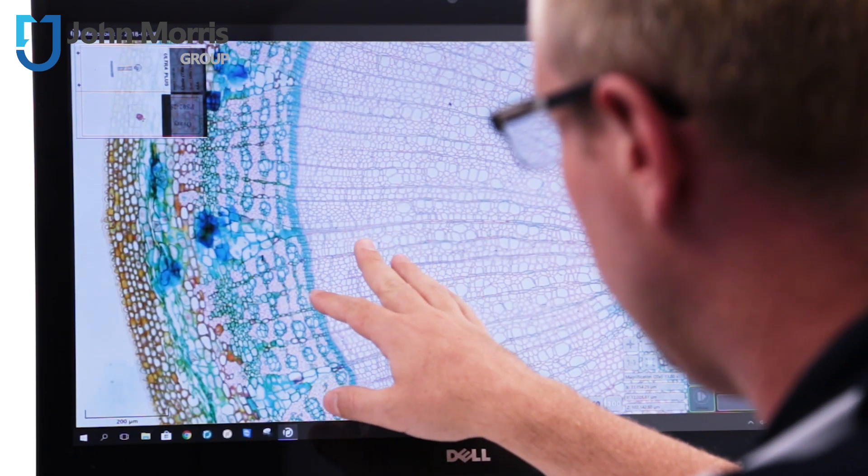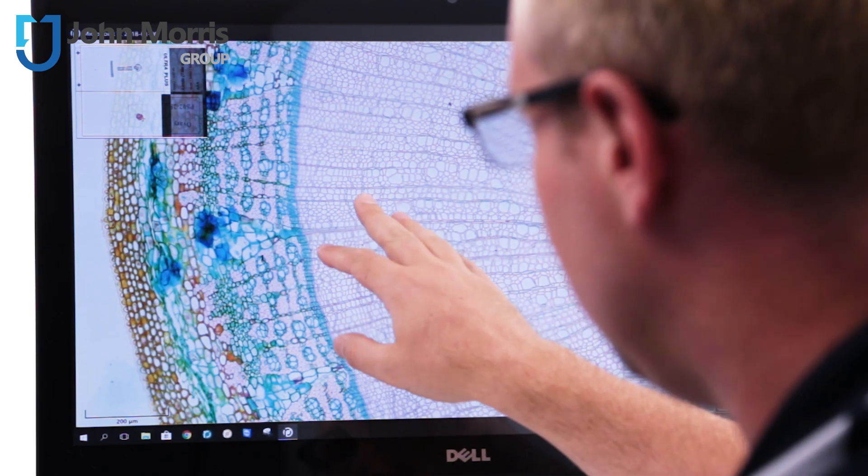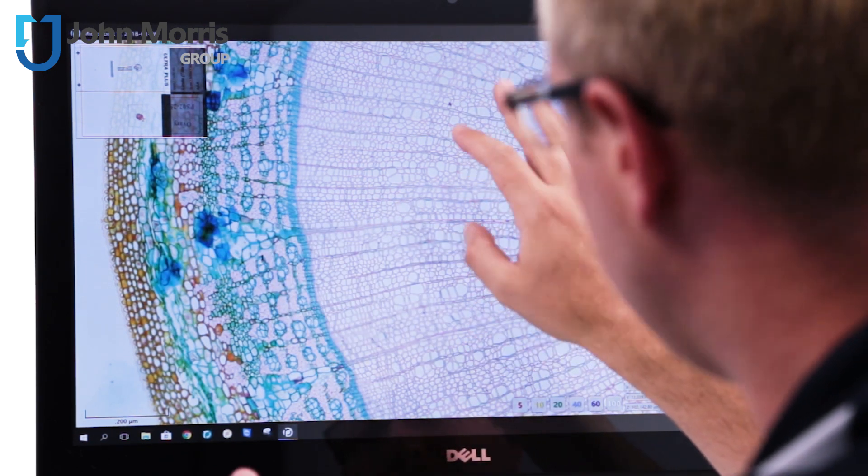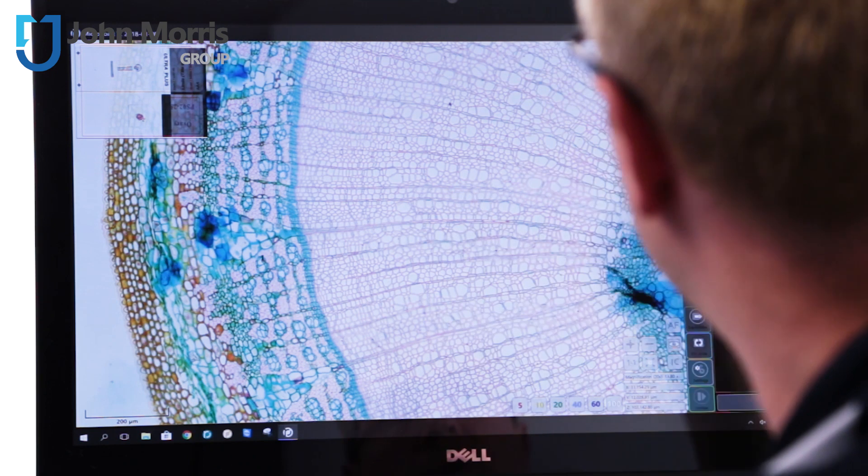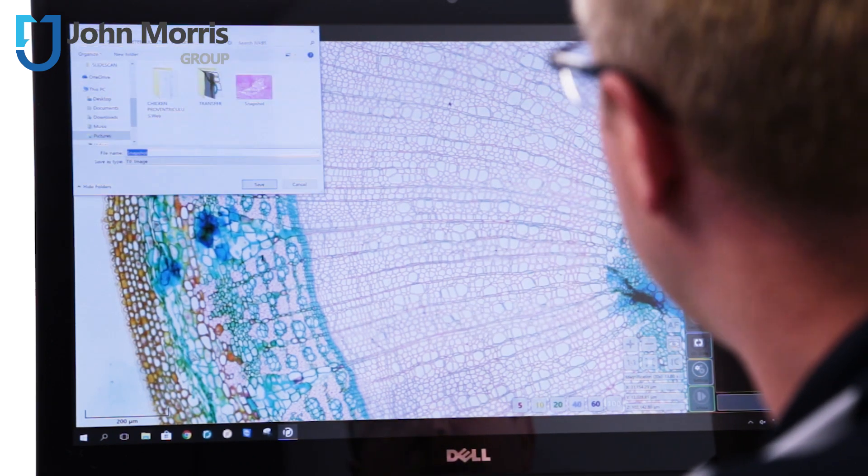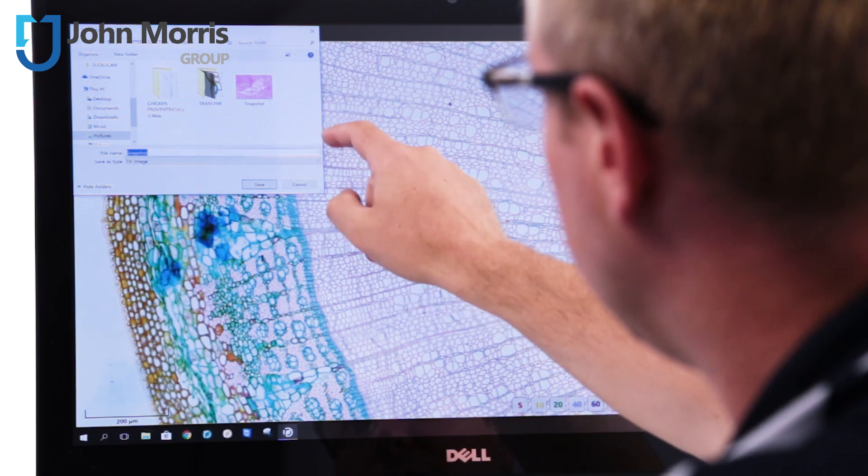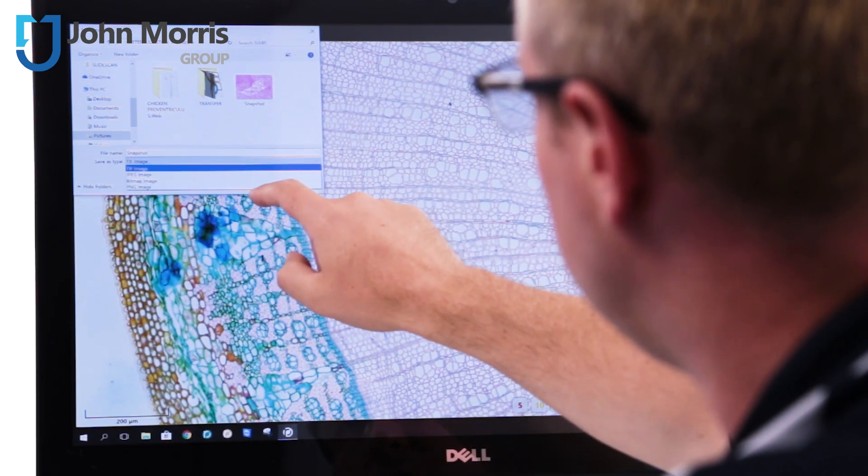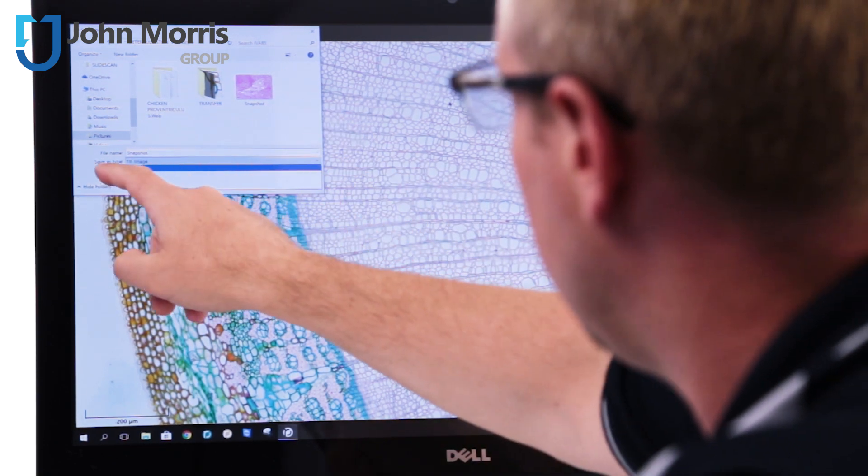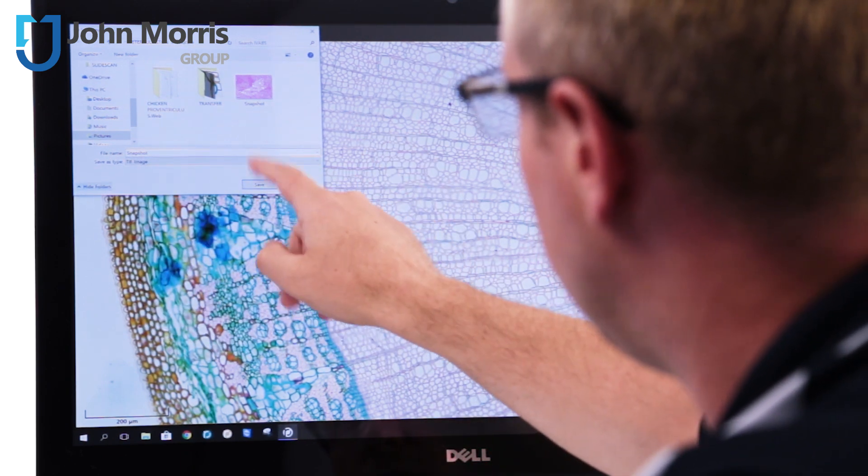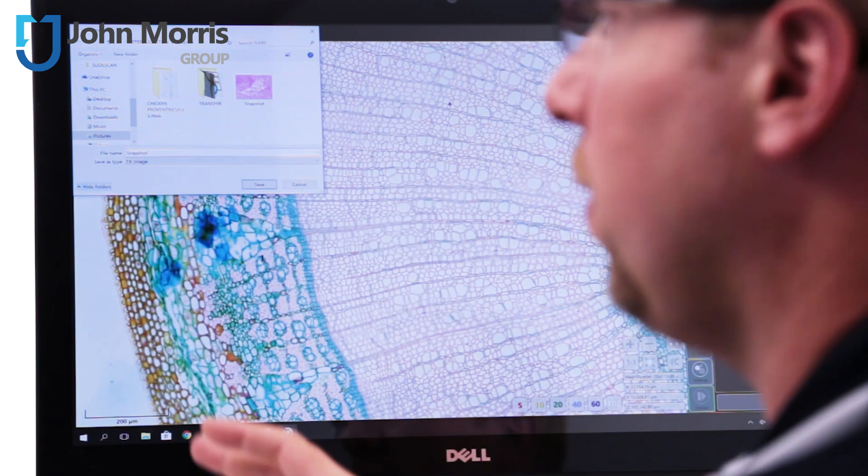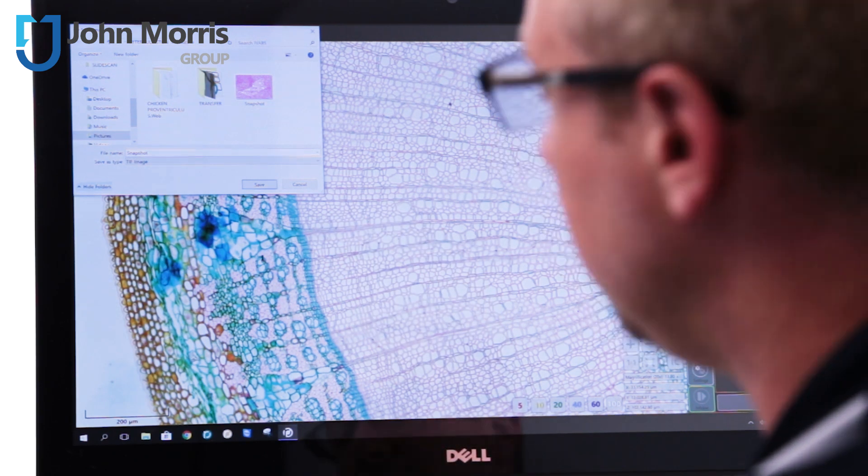So here in microscope mode if I wanted to take a copy of this exact screenshot and send this to somebody else that I'm working with, I can just push this button right over here, take a snapshot, call it whatever I like. I can save that as a TIFF image or a JPEG or a bitmap, whatever is convenient. Push save and then email that file directly over to my collaboration partners.